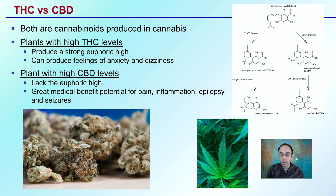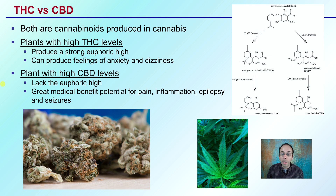THC compared to CBD — both are cannabinoids produced by cannabis. The original molecule, CBGA, can then be converted by the plant into THC or CBD. Many growers are looking at CBG-dominant varieties so they could produce whatever ratio they deemed desirable. Plants with high THC produce a strong euphoric high, but can also cause feelings of anxiety and dizziness. Plants with high CBD lack that euphoric high but have great medical benefits — potential for pain, inflammation, and seizures. CBD, especially in younger children, has been shown to reduce seizures, which has helped gain popularity in the medical community.